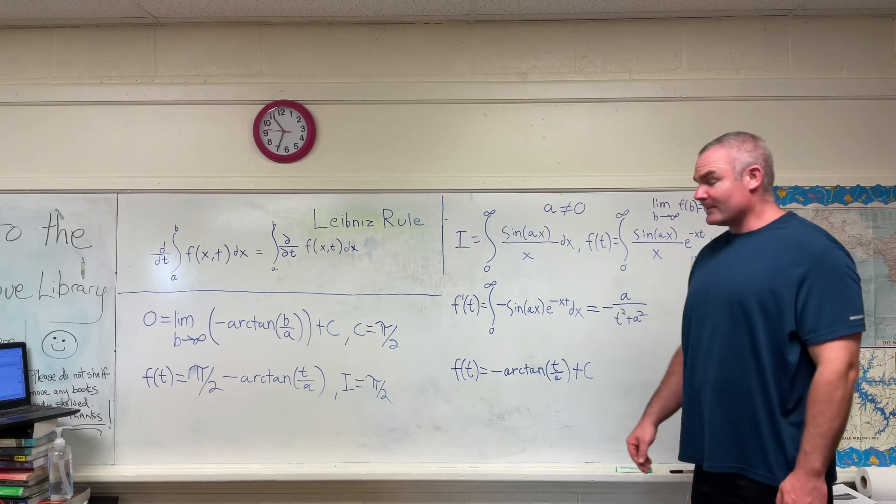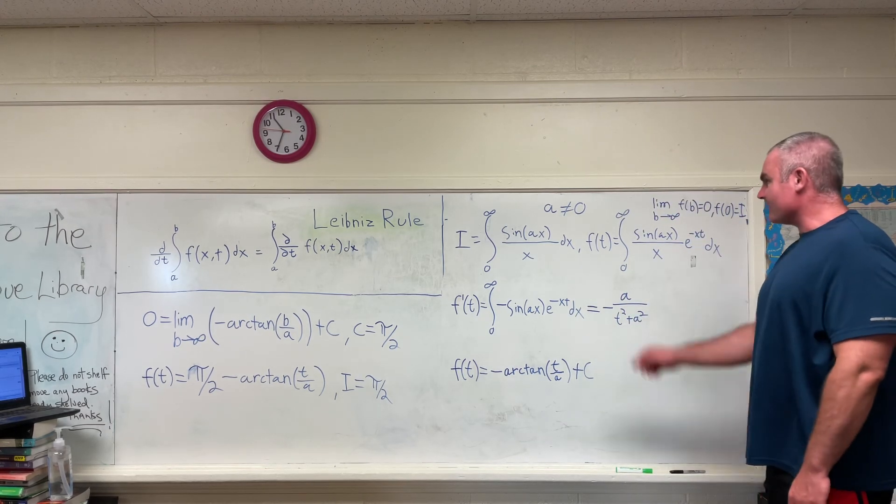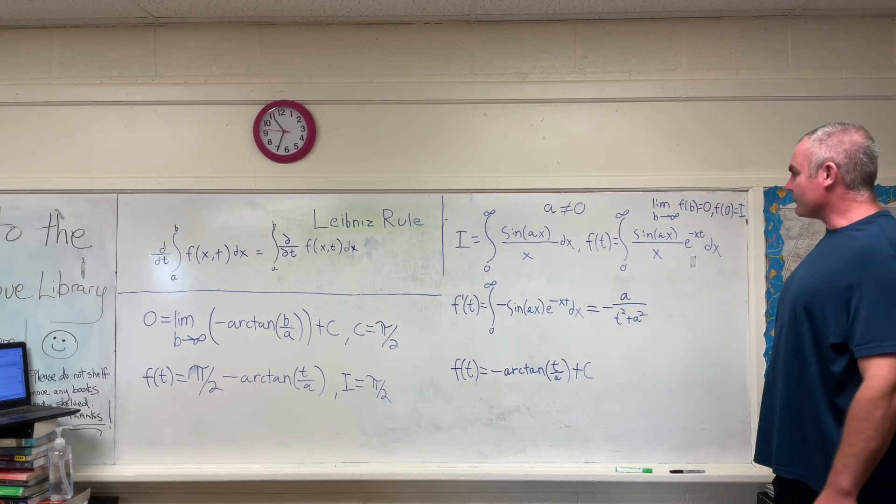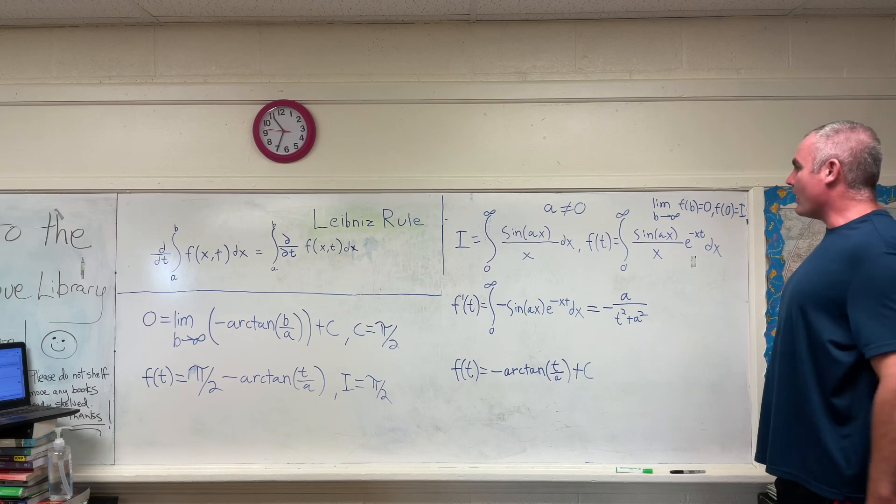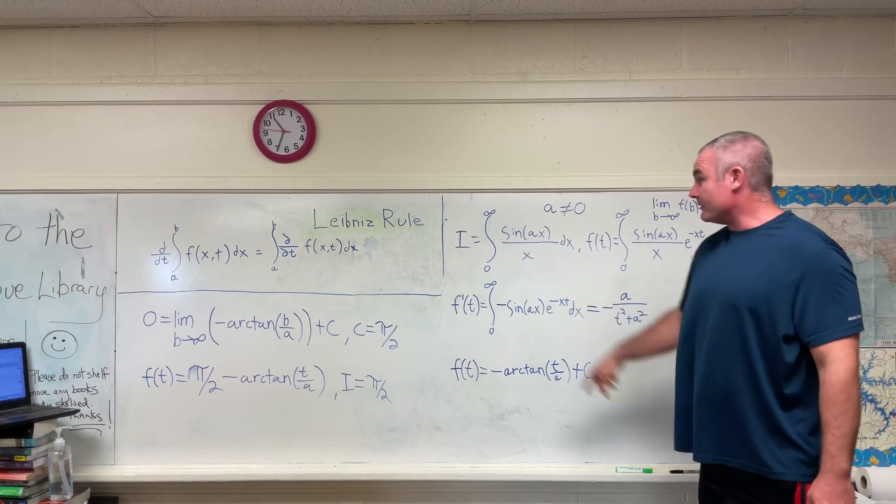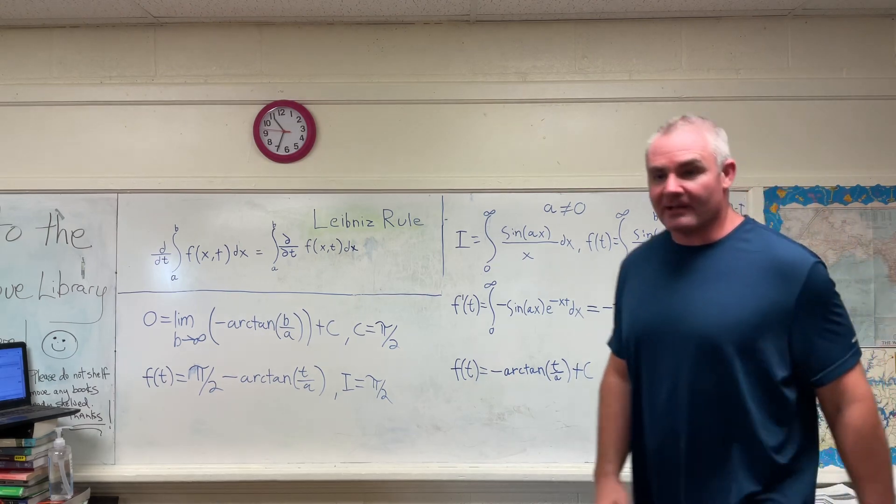And that's it. I thought that was pretty interesting that it doesn't matter what value you place in there for a. It's going to give you pi over two no matter what. And we're going to be using this result a lot in future videos. So I hope you enjoyed that. We'll see you next time.